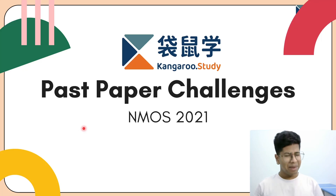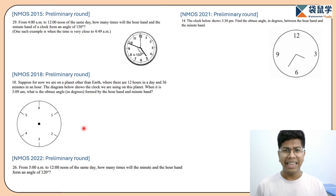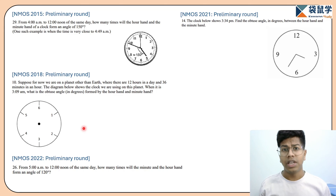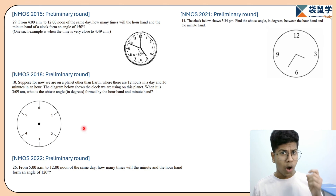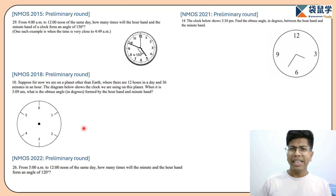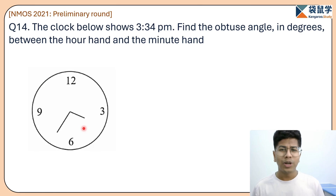Welcome back to our channel. My name is Teacher Smith and today we are going to understand a very interesting concept of clock problems. Recently in the past few years, we have observed clock problems have arrived four times. This year, if a clock problem arrives, we should be prepared. Let's take an example from NMOS 2021, question 14. The question says the clock below shows 3:34 PM.